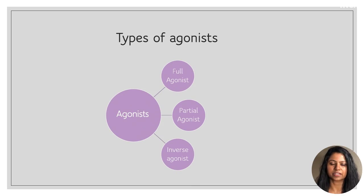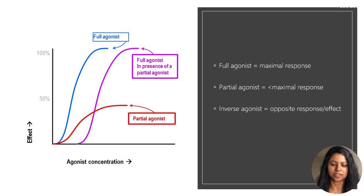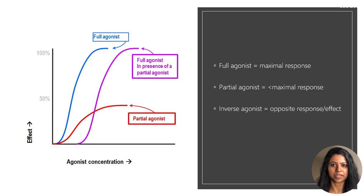Now let's take a look at the different kinds of agonists. When a partial agonist binds to the receptor, it produces less than maximal response — in other words, less than 100% response as that produced by a full agonist. A partial agonist has lower efficacy than a full agonist. Sometimes, when a partial agonist is given in the presence of a full agonist, it may behave like an antagonist.